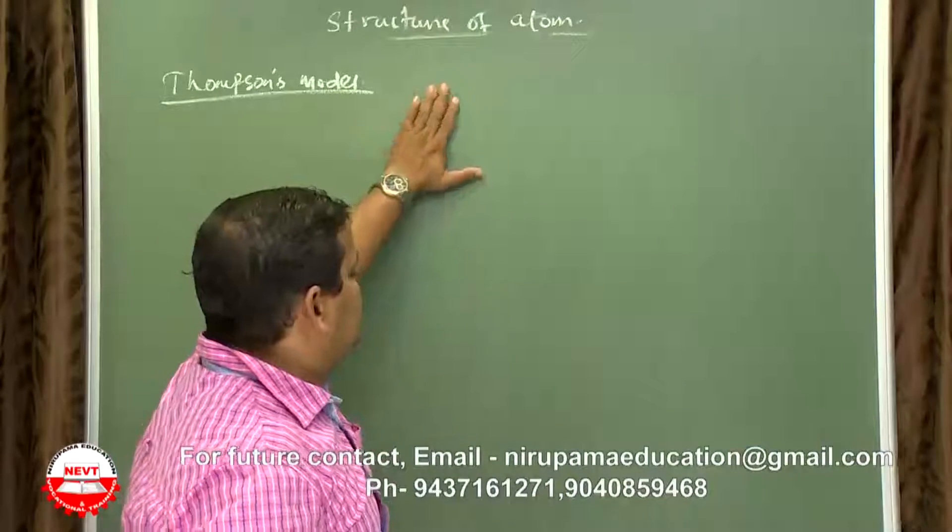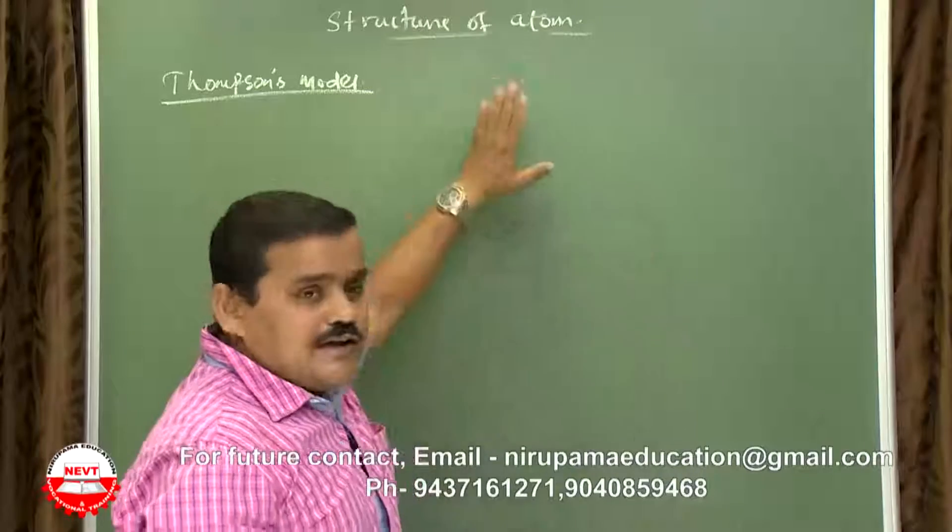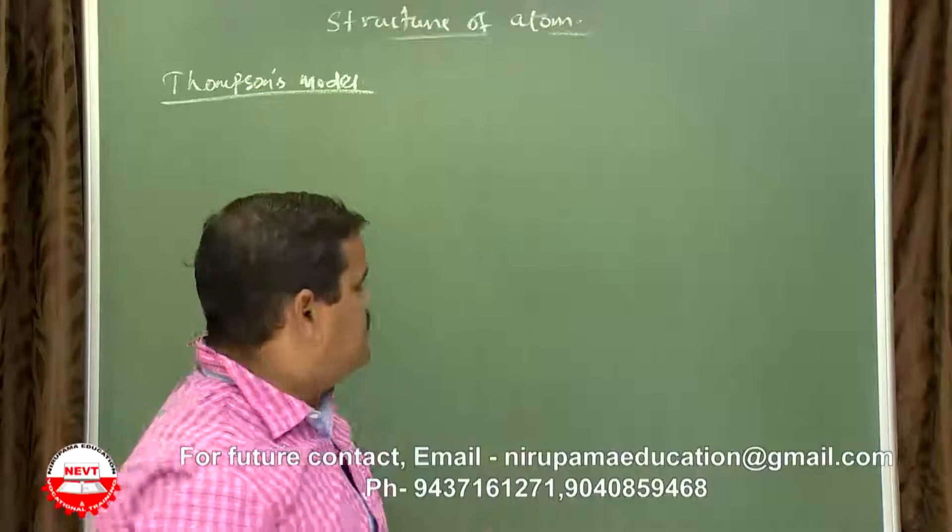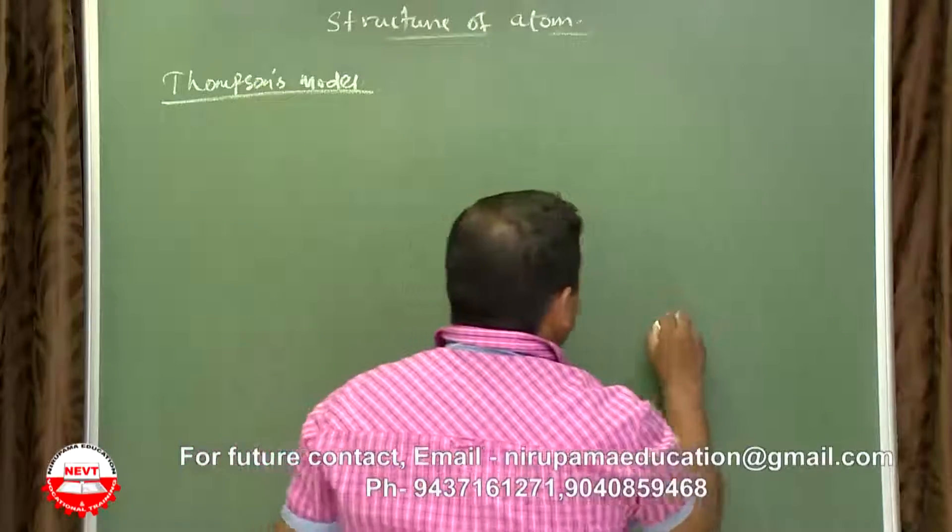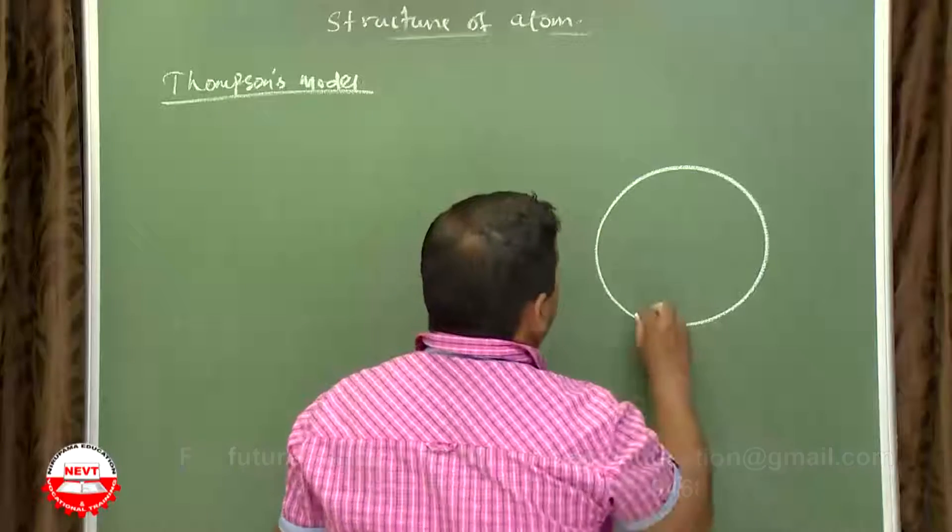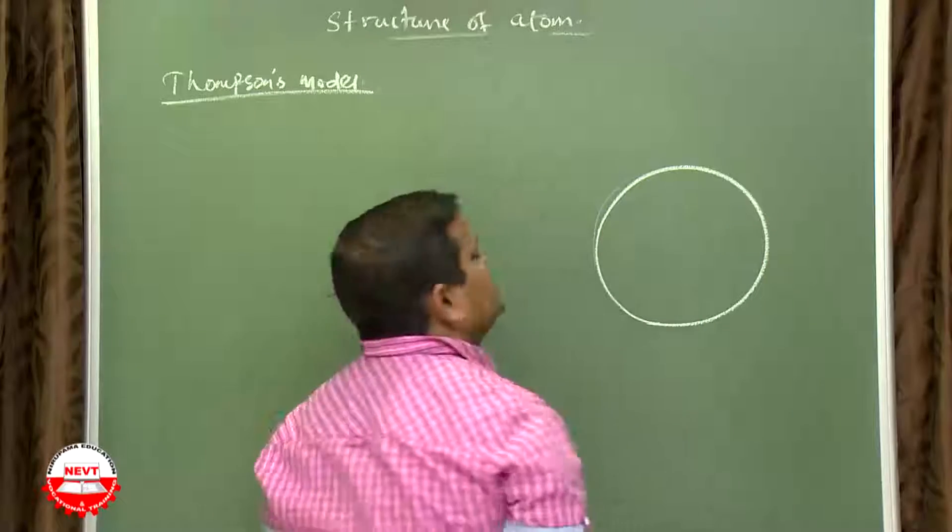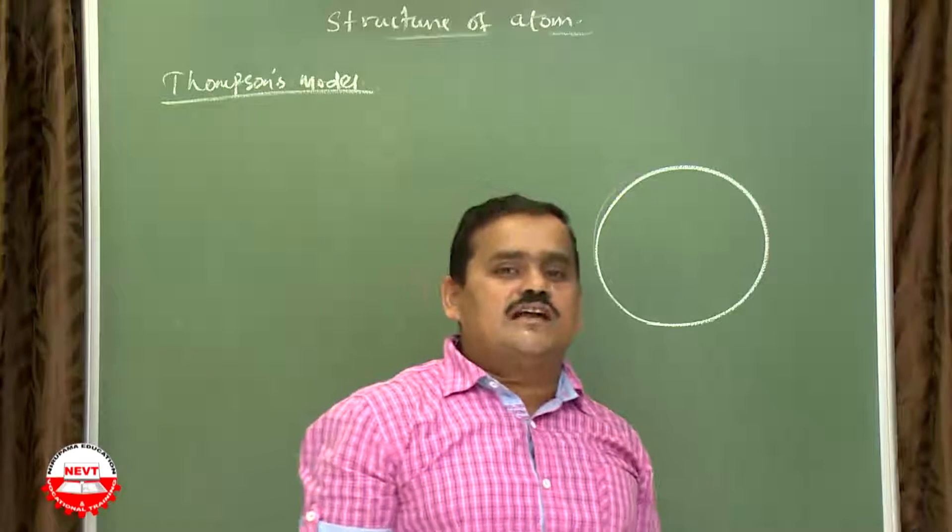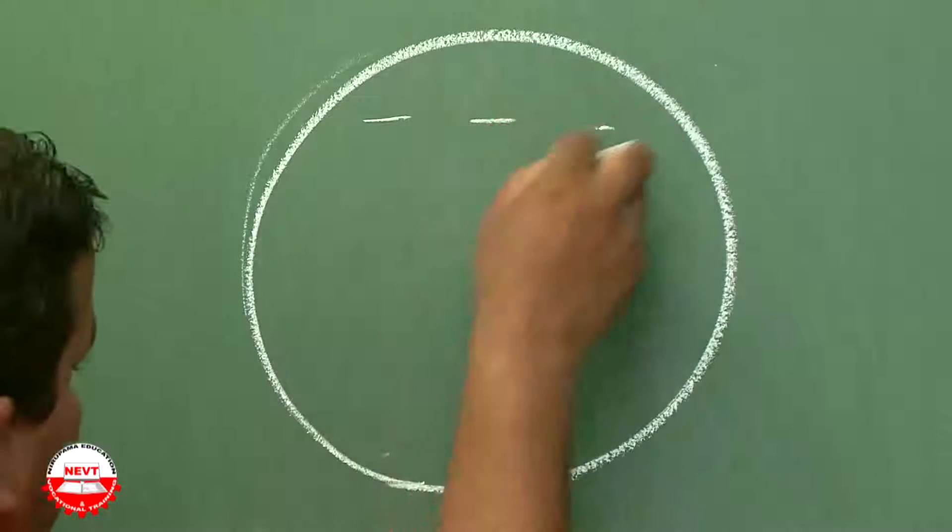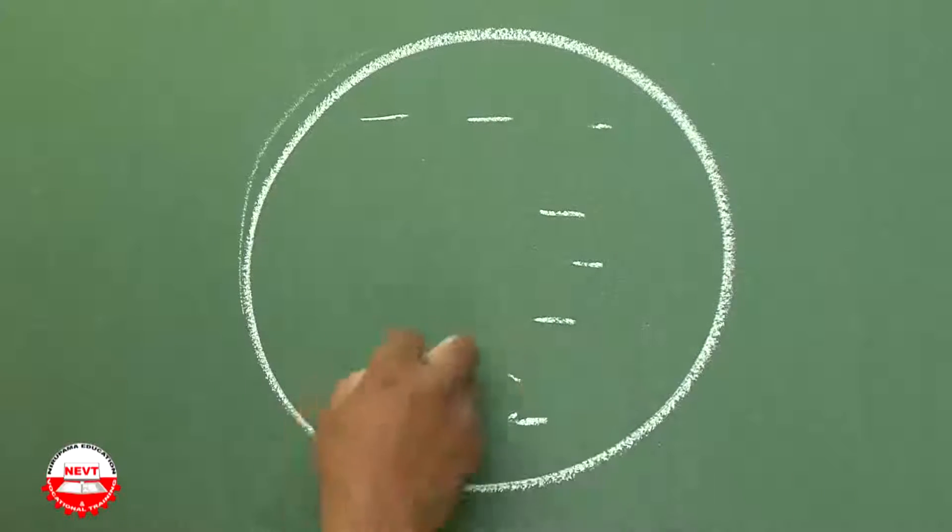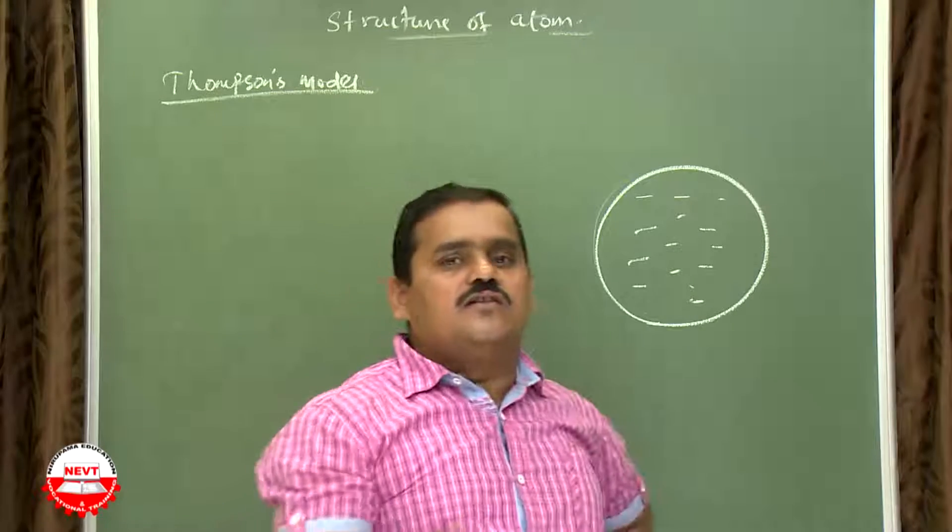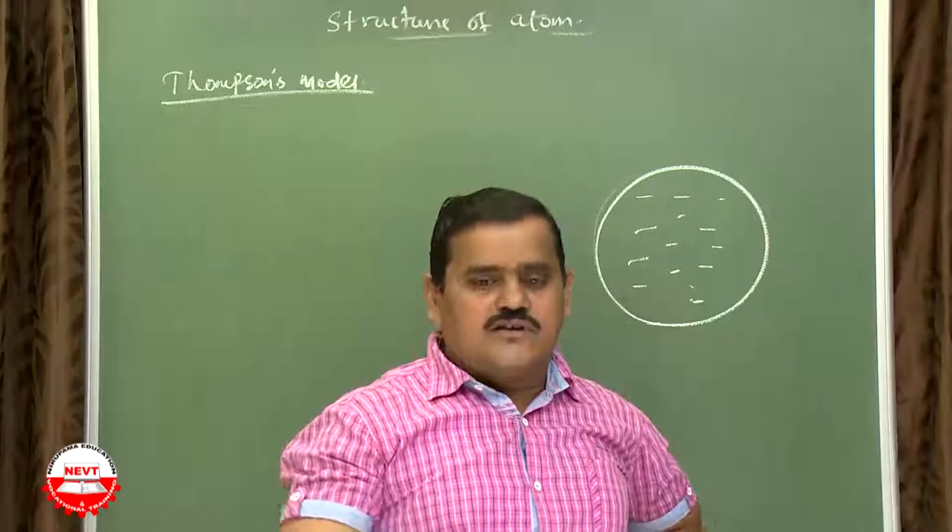So what is Thomson's model? One question will come, two mark question. Thomson's model of an atom, he said that just two points you have to write from your book. Atom consists of a positively charged sphere in which electrons are embedded in it.